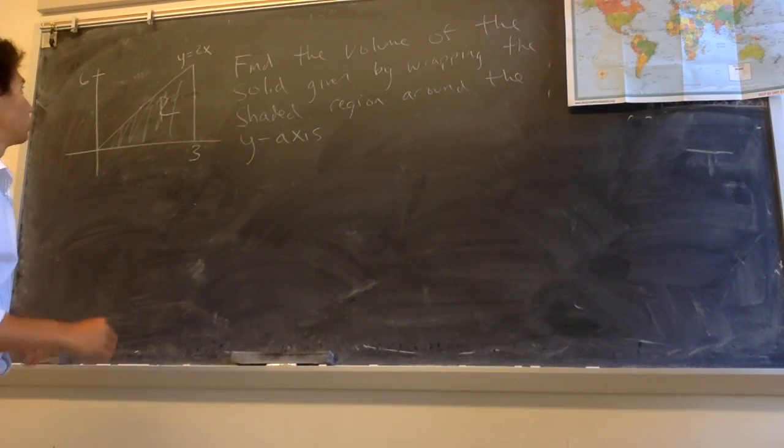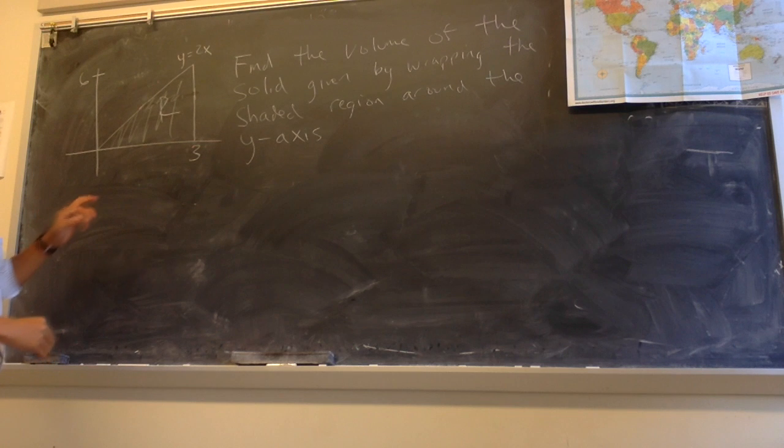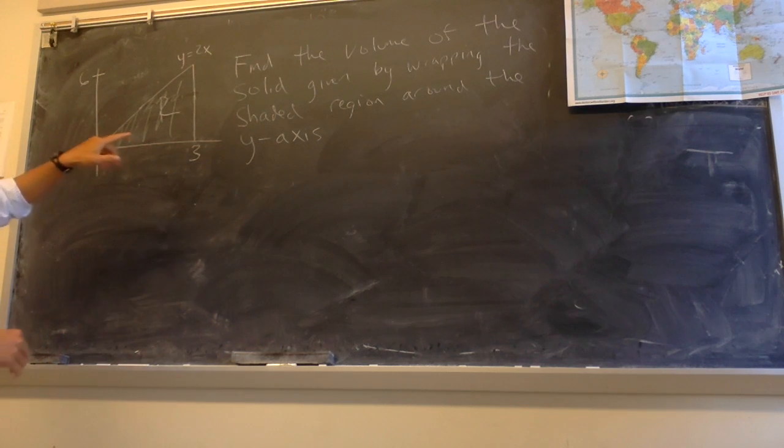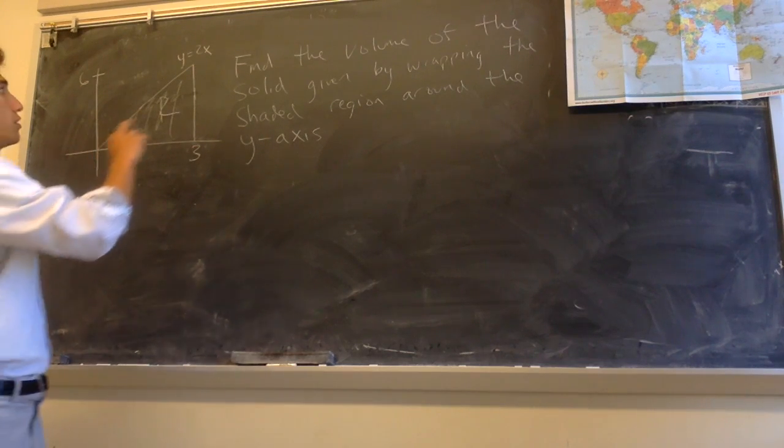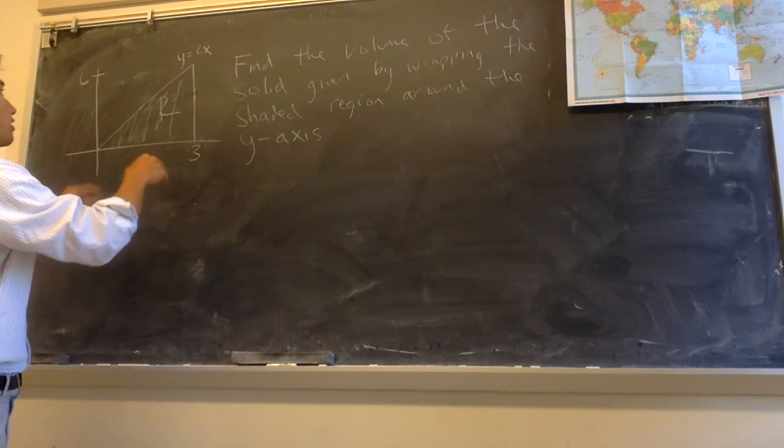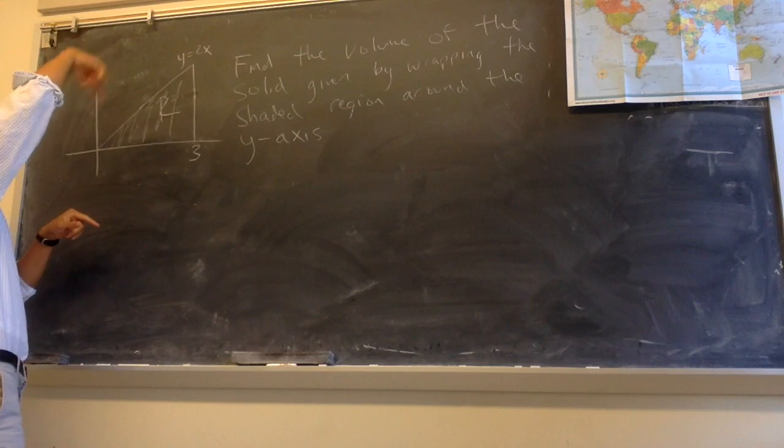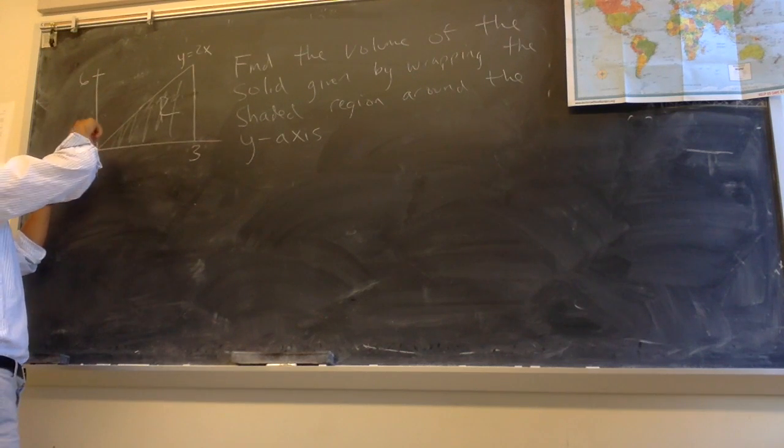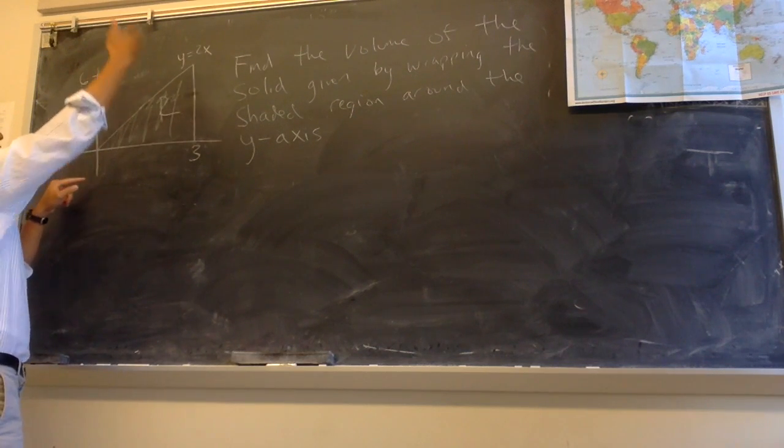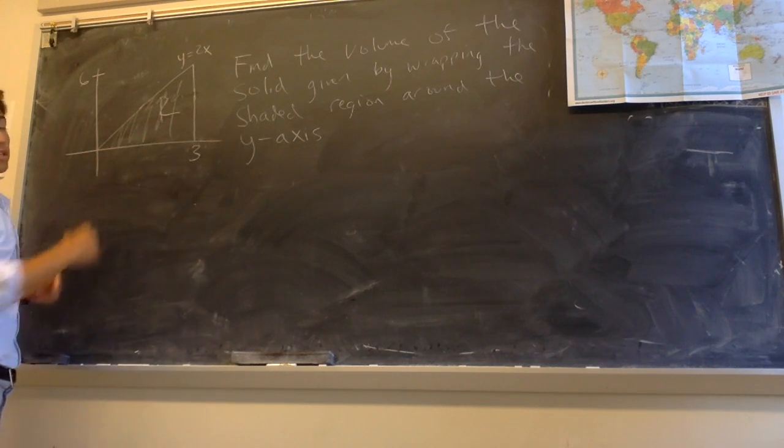In this video we're going to find the volume of a solid given by wrapping a region around the y-axis. The question is to find the volume of the solid given by wrapping this region around the y-axis, and this region is enclosed by the line y equals 2x, the line x equals 3, and the x-axis.